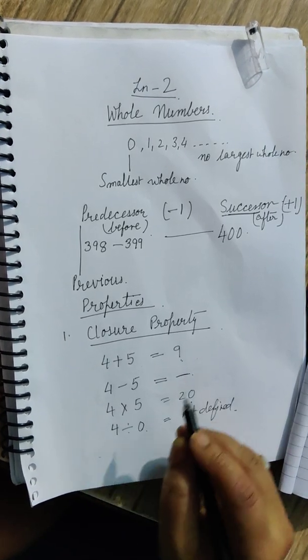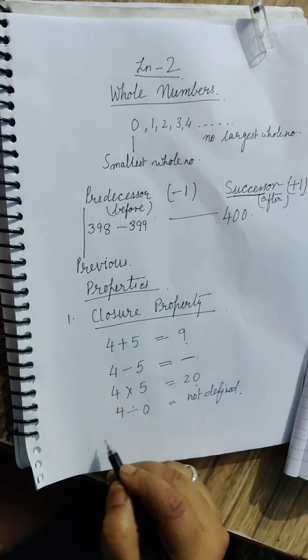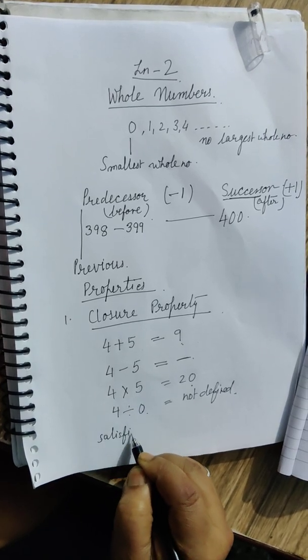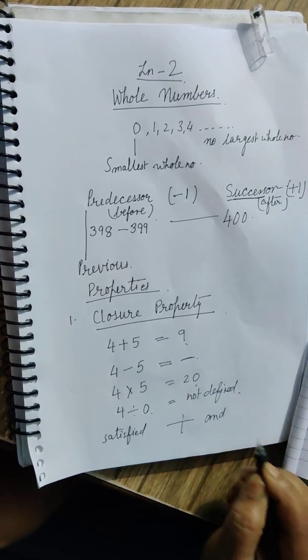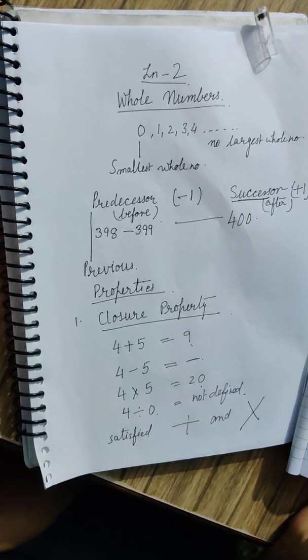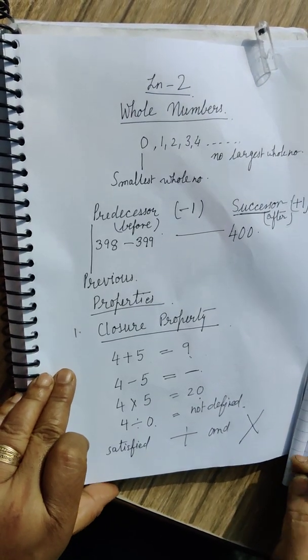So basically closure property is satisfied in only addition and multiplication. Never in subtraction and division.